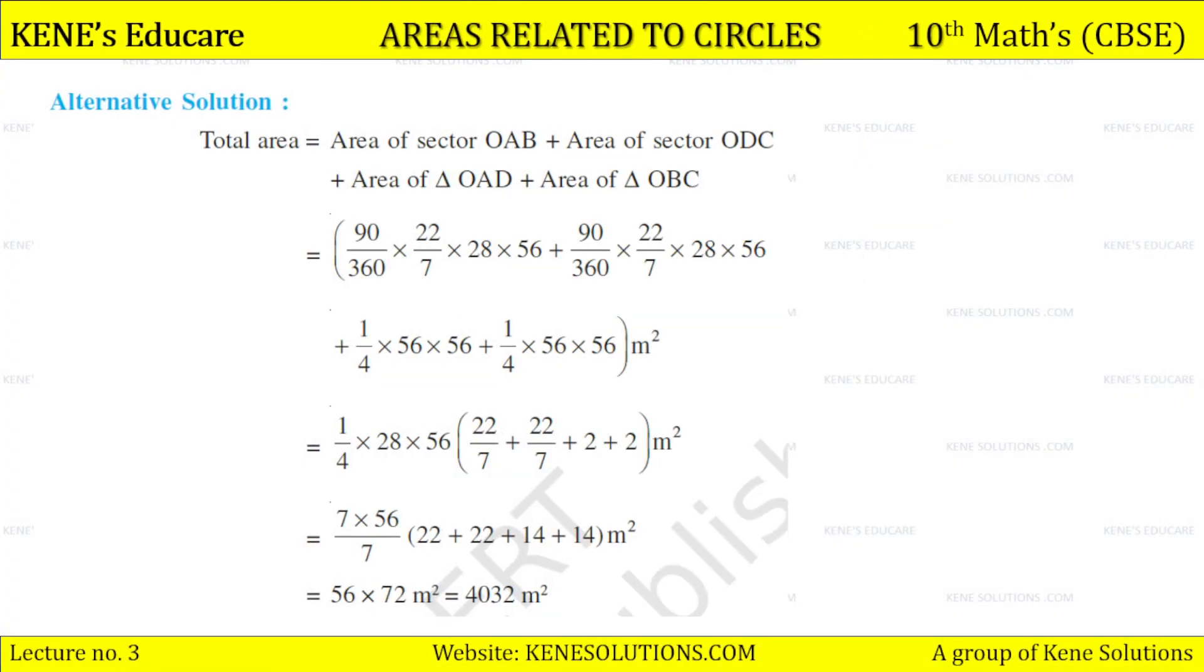What is the alternate solution? Total area is equal to area of sector OAB + area of sector ODC + area of triangle OAD + area of triangle OBC, as I have previously said.